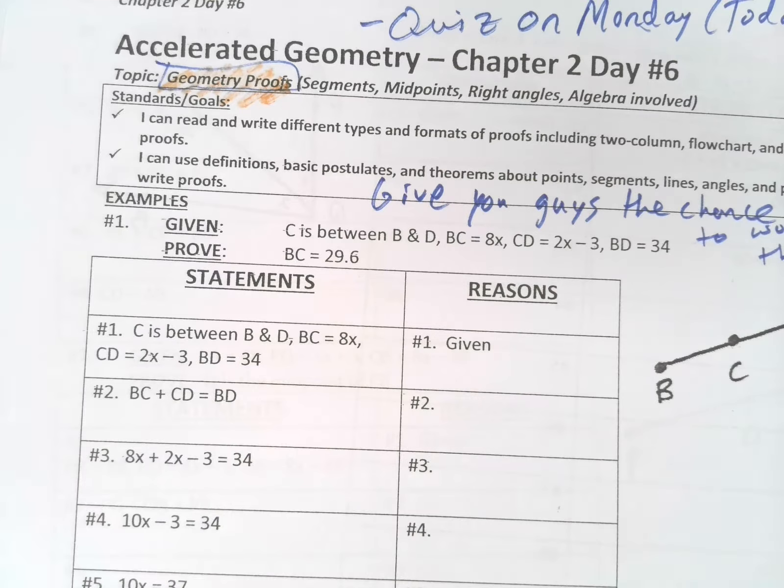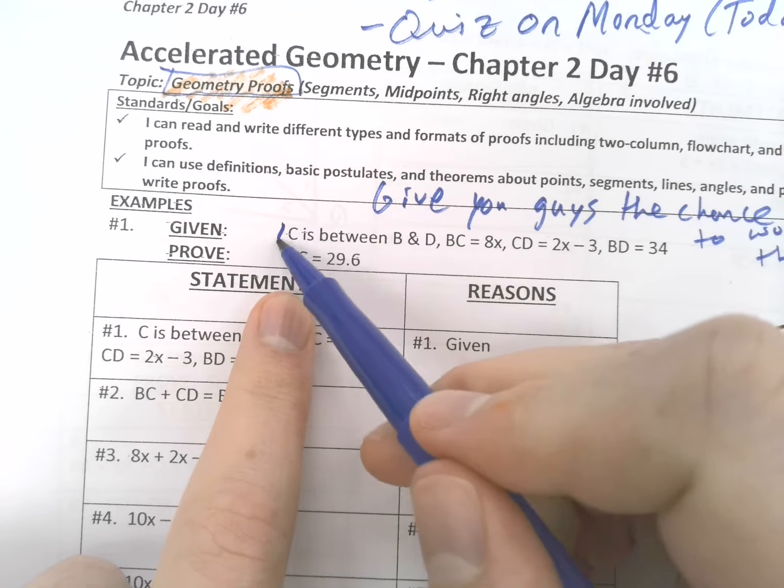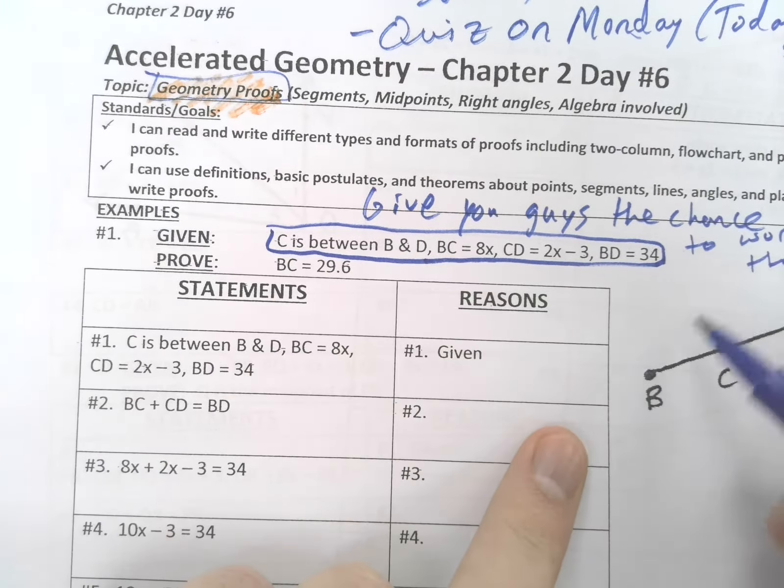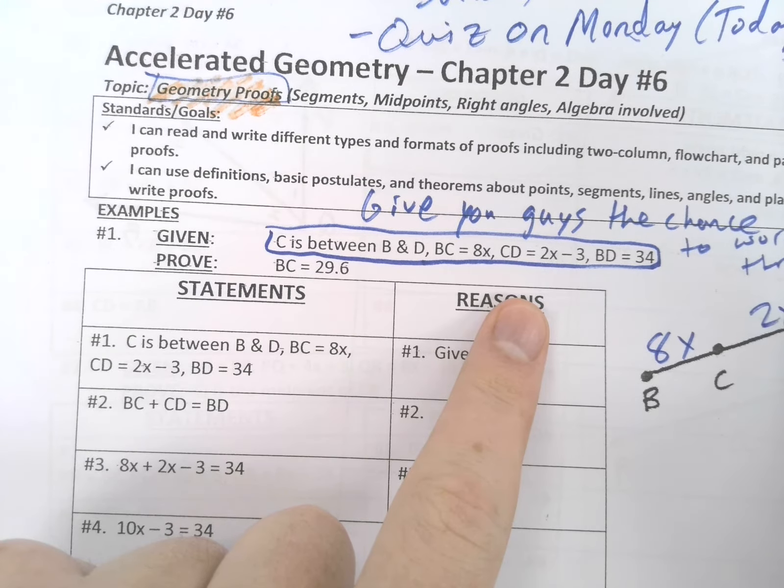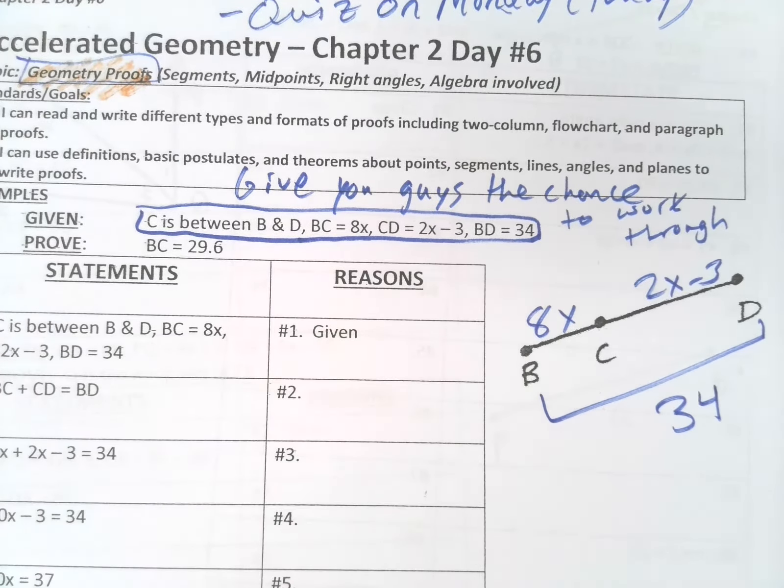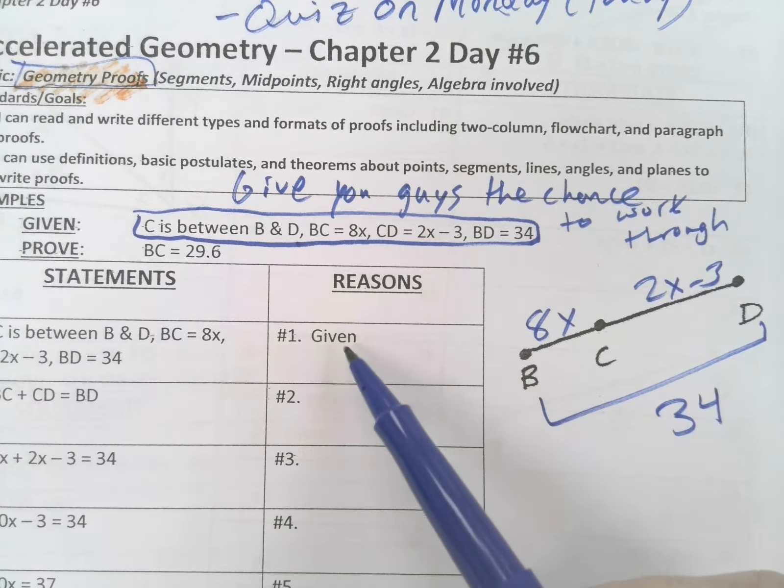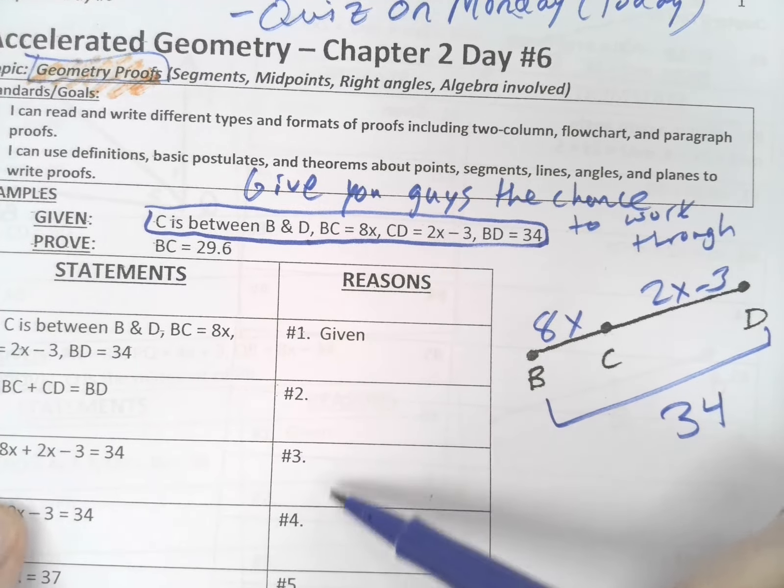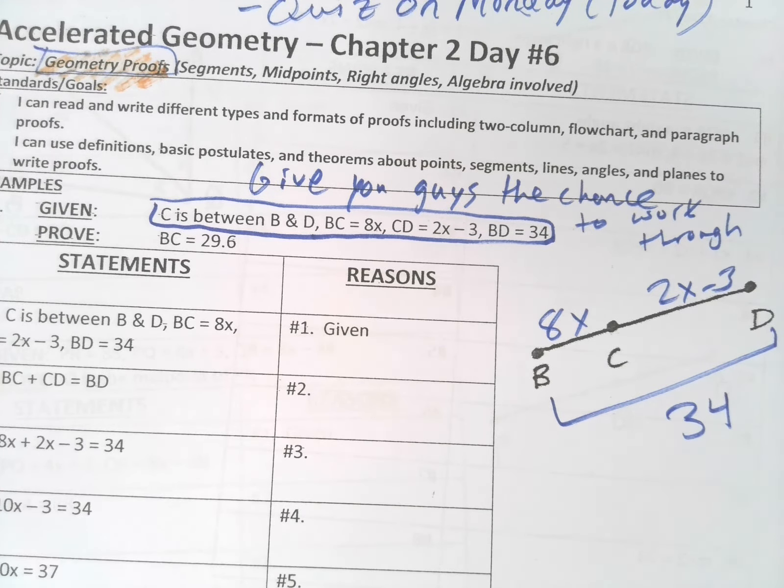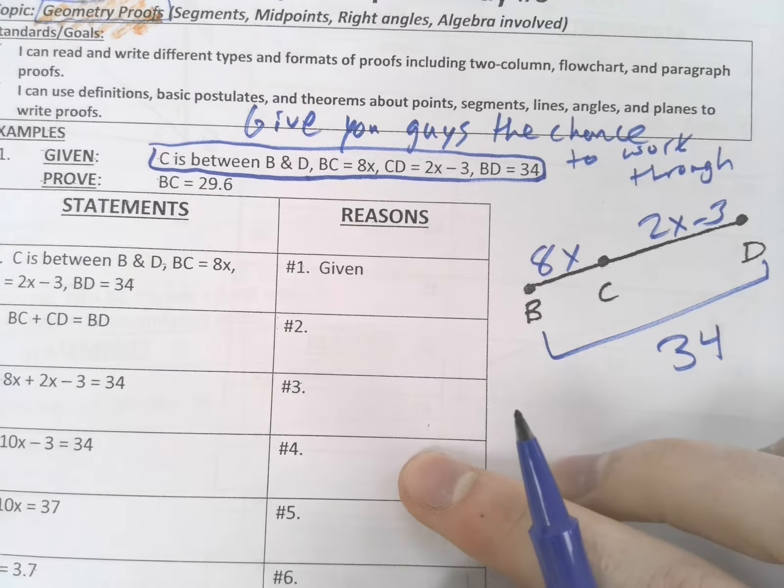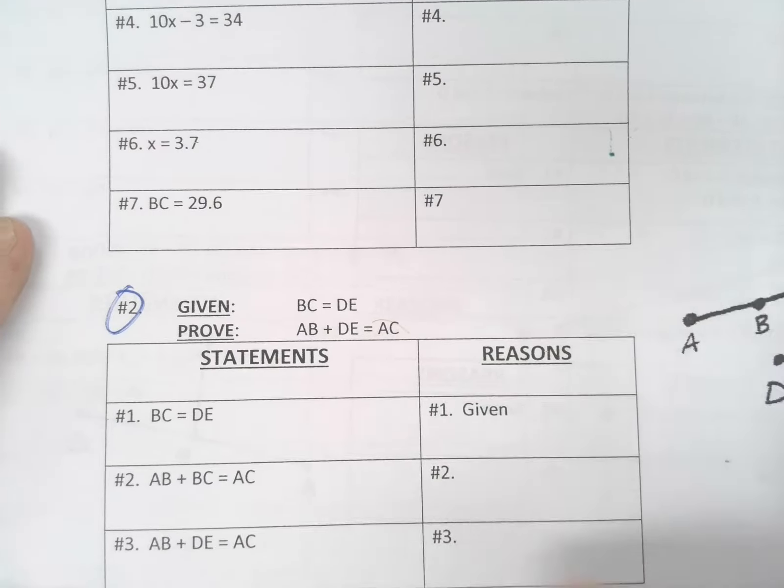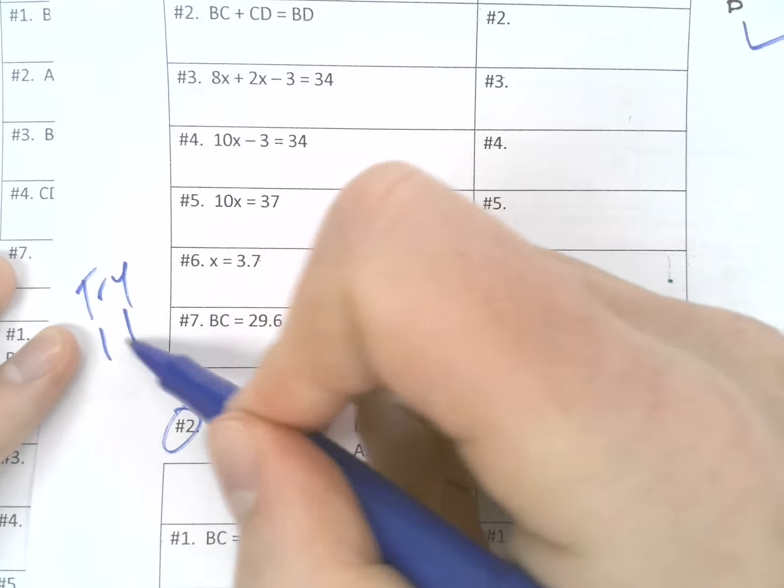For example, I'm going to let you guys try number one. We're given C is between B and D, BC equals 8x, CD is 2x minus 3, and the whole thing is 34. This is the information we're given. So I'm going to pause the video and you can try number one and number two as well.